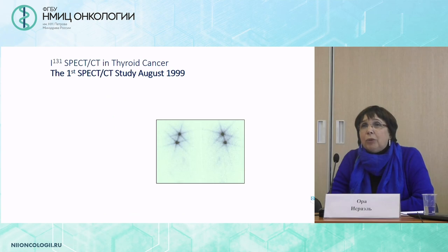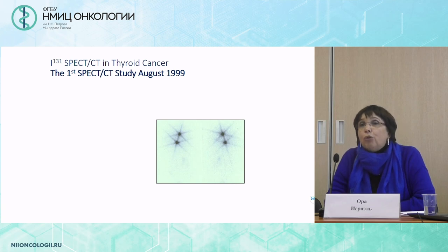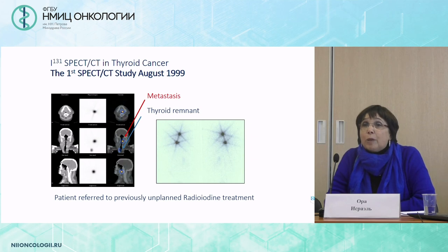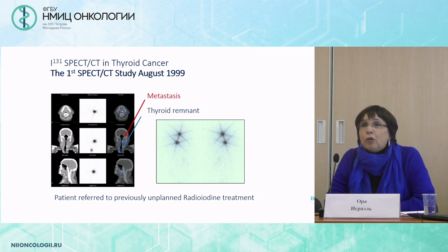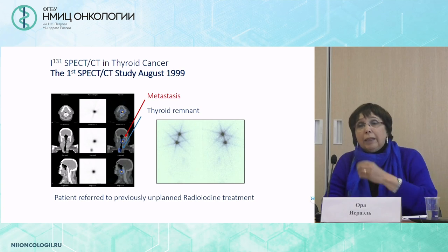This was the first SPECT-CT study we did almost 20 years ago in a patient with thyroid cancer. We know that iodine-131 is a good and very specific tracer for thyroid cancer, but the more specific a radiotracer is, the fewer geographical landmarks we have. It was always very difficult to know where sites of increased uptake were located. When we added the CT and used SPECT-CT, we identified a previously unknown metastasis — what I would call beginner's luck — and the patient received previously unplanned radioiodine treatment with a good follow-up.